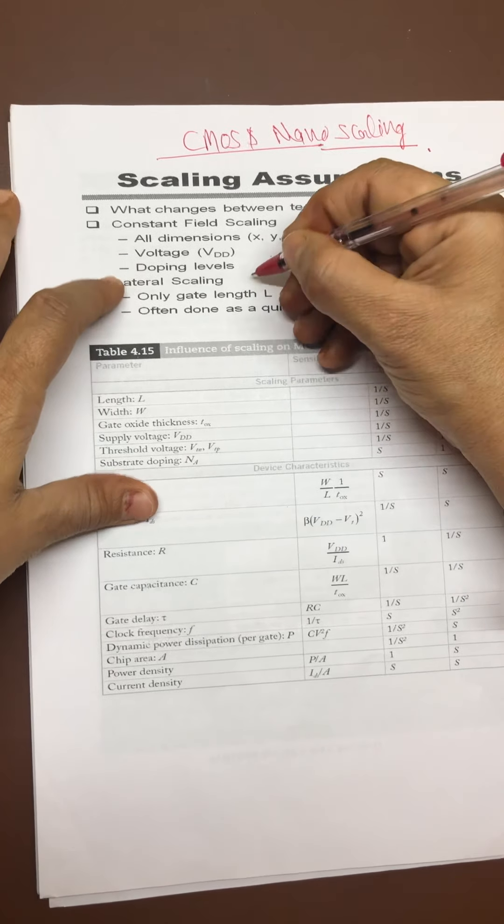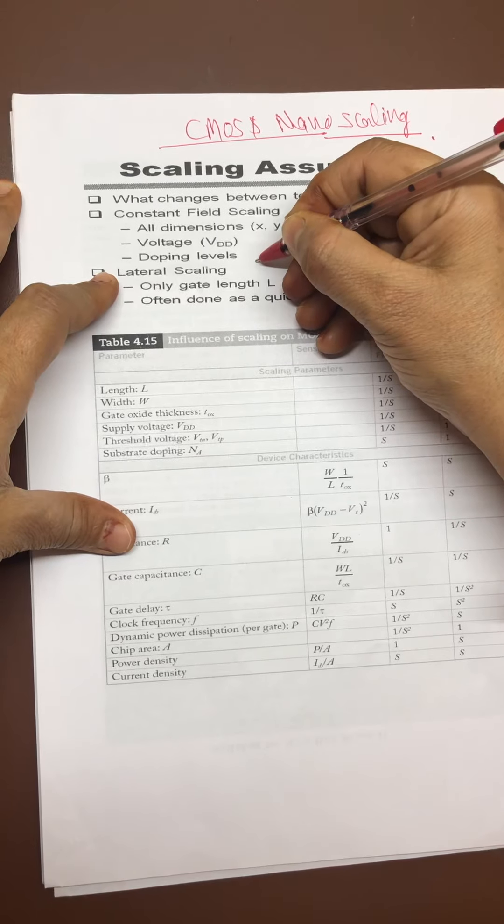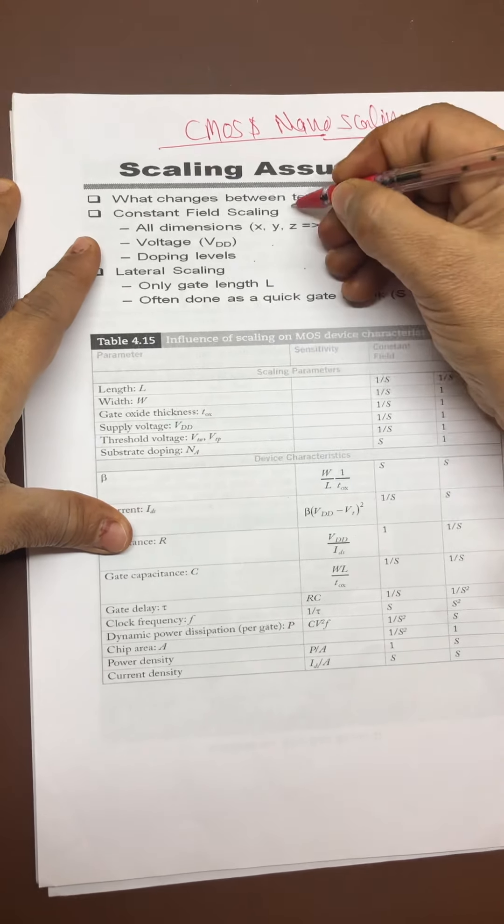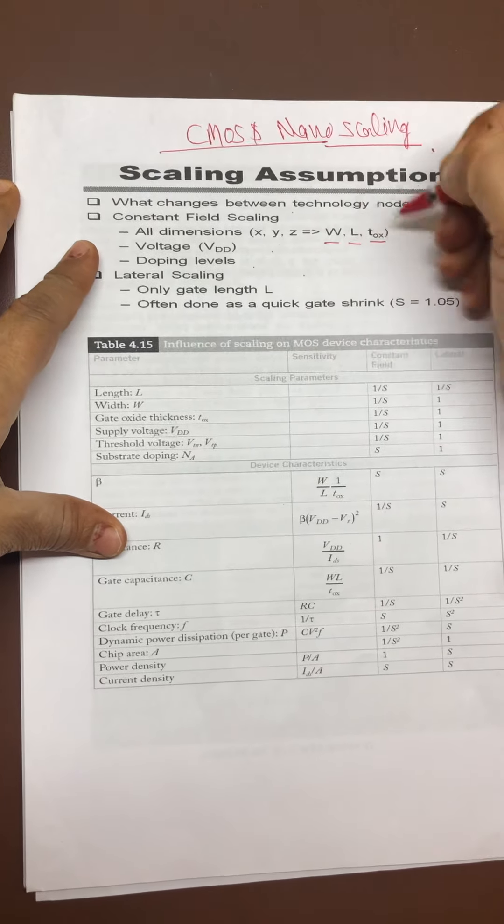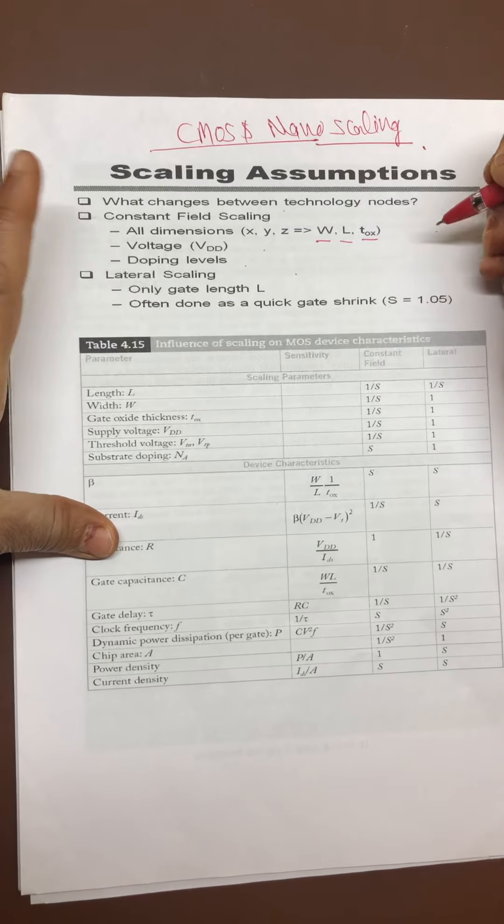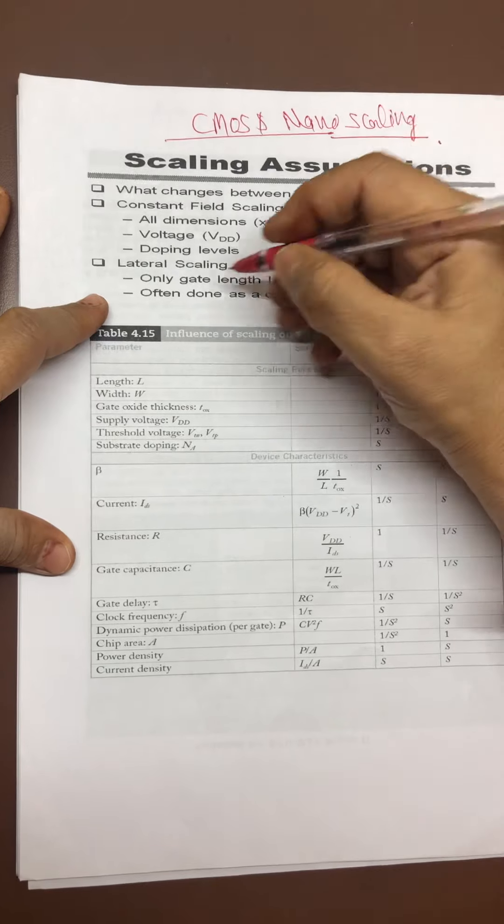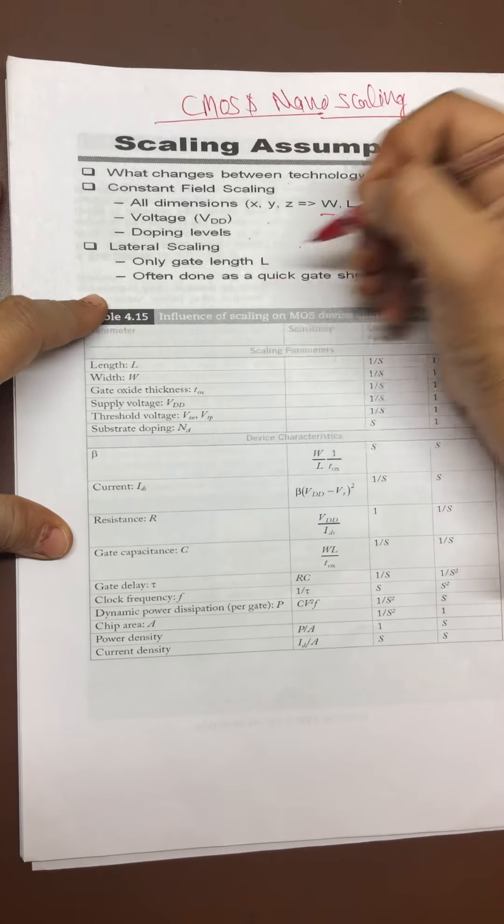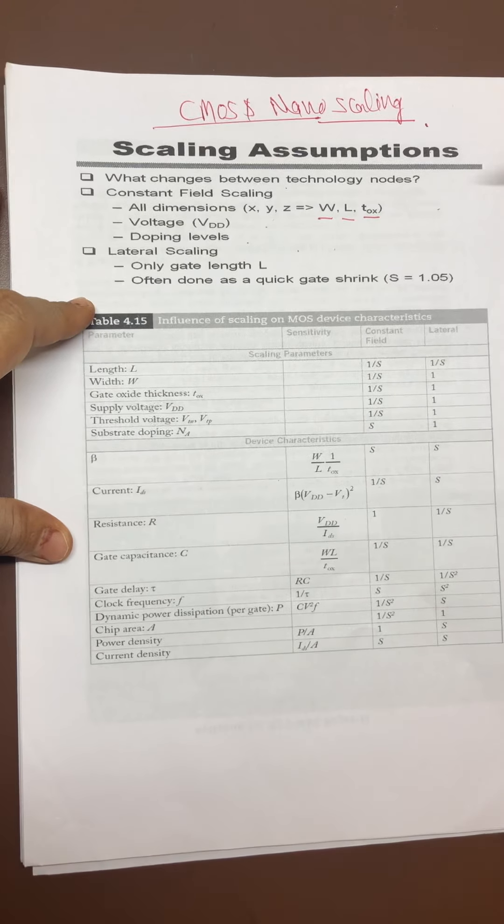Constant field scaling means these parameters are constant with respect to their fields. Lateral scaling only gate length, often done as quick gate shrink. S is a scaling parameter and generally we consider its value is 1.0.